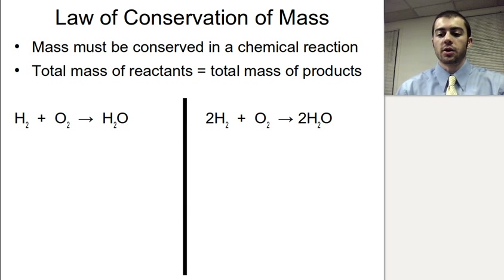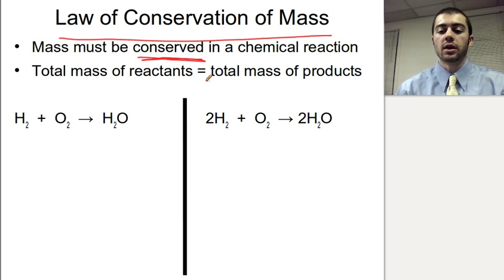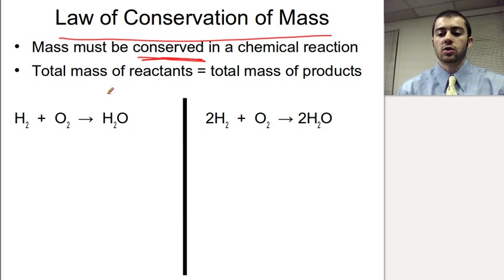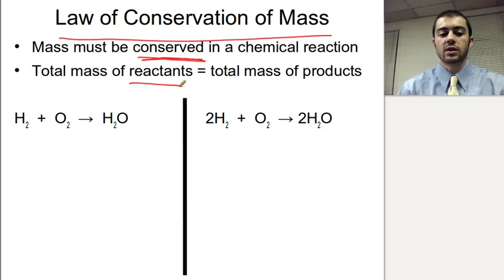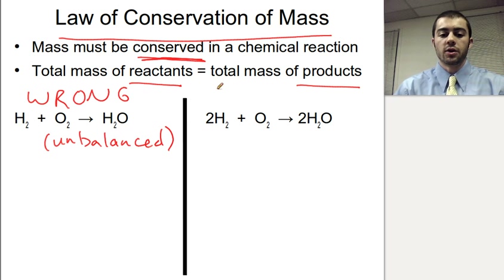The last thing to go over here is the law of conservation of mass, which tells us that mass must be conserved in a chemical reaction. Matter cannot be created or destroyed — if we have a certain amount of mass to begin with, we have to end up with that same mass at the end. If we have 20 grams to start with, we have to have 20 grams at the end. So the total mass of the reactants equals the total mass of the products. Here we have two equations — one is the unbalanced equation, and the other is the balanced equation.